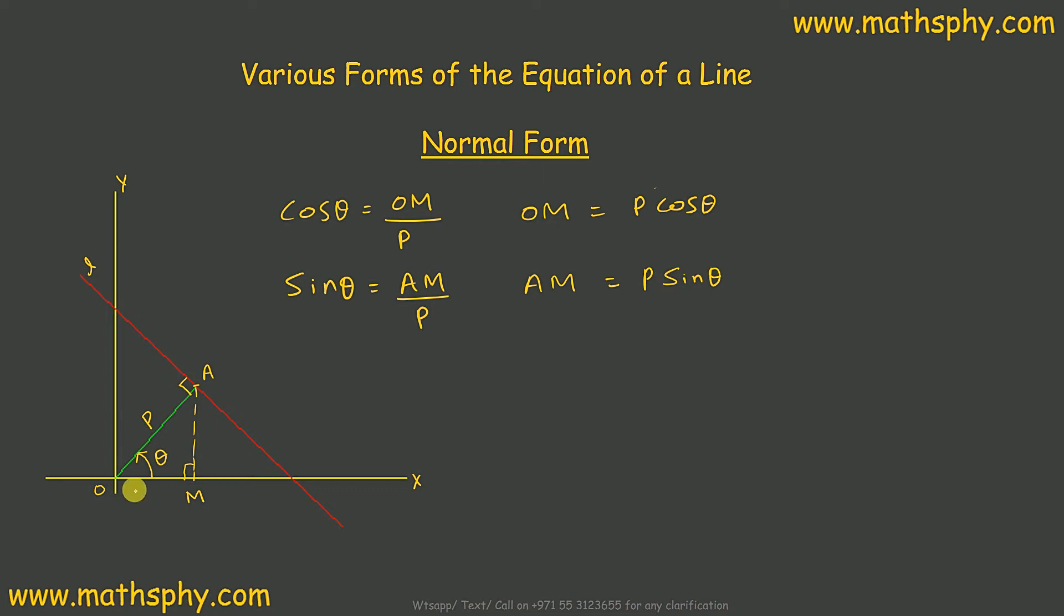Now, you see, value of OM here is P cos theta. Value of AM here is P sin theta. Now, you see, the coordinates for point A would be, so this would be P cos theta, comma, P sin theta.